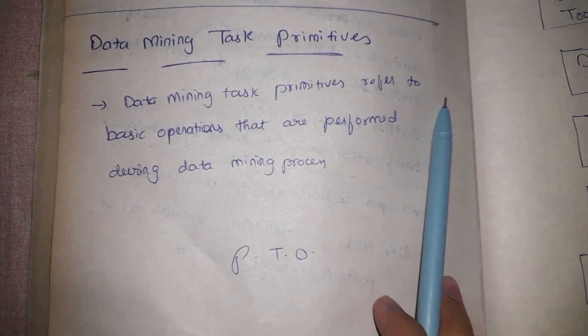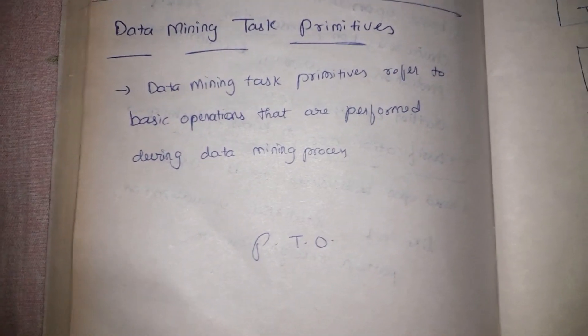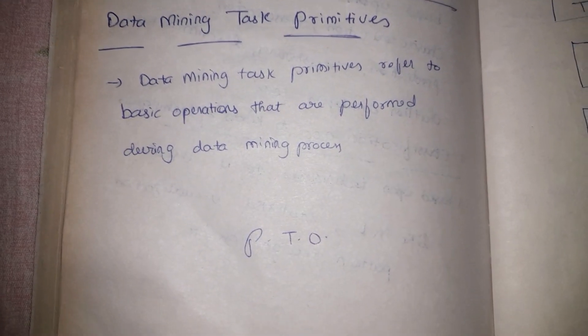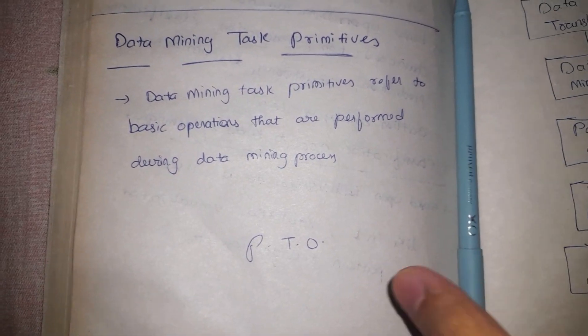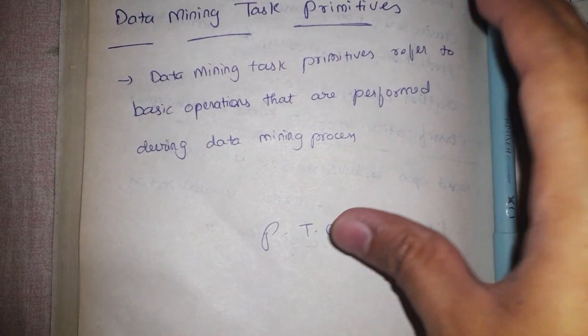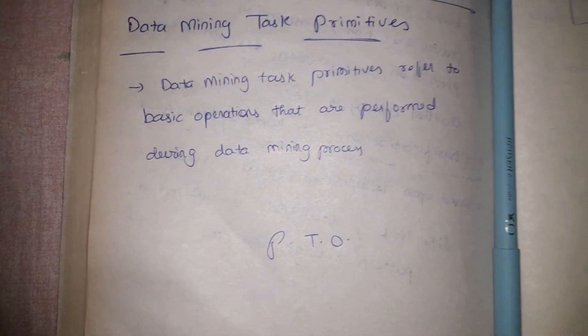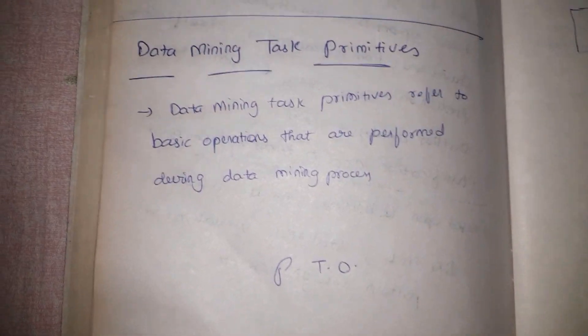In this video we are going to discuss data mining task primitives. Data mining task primitives simply refers to the basic operations that are performed during the data mining process. There are some basic operations which we need to perform when we are performing data mining on a particular large set of data. Let's try to understand these steps.